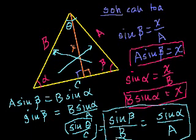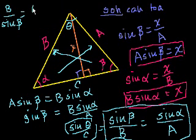And of course, you could have written it, since it's a ratio, you could flip both sides of the ratio. You could write it b over the sine of b is equal to a over the sine of alpha. And this is useful.